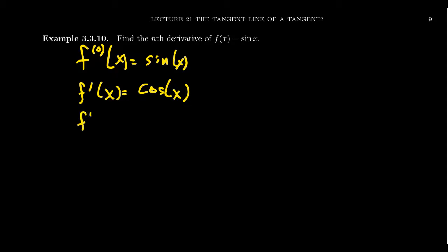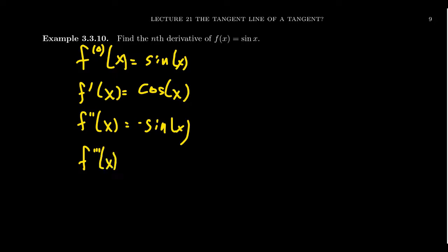The derivative of cosine is itself negative sine, which, because we know the derivative of sine, sticking a negative one in front of it just means we can factor the negative one out by derivative properties. This tells us that the third derivative of sine, which is the derivative of negative sine, would then be negative cosine of x.